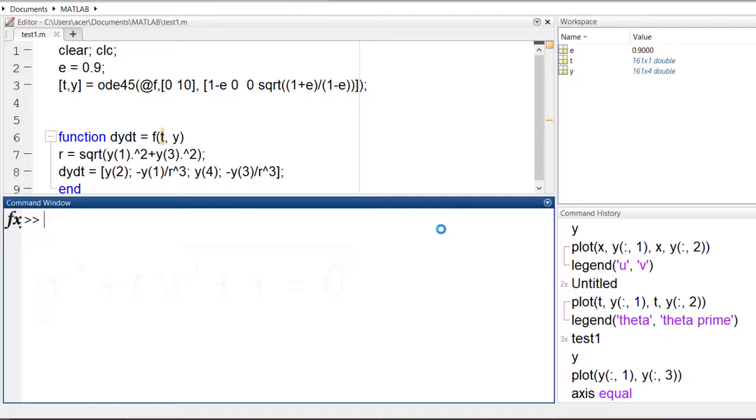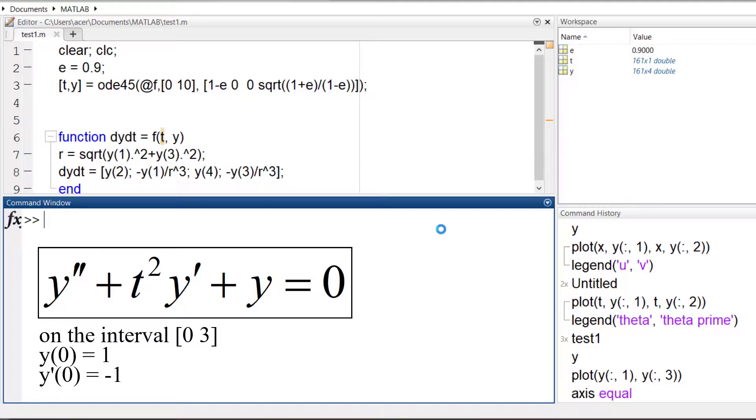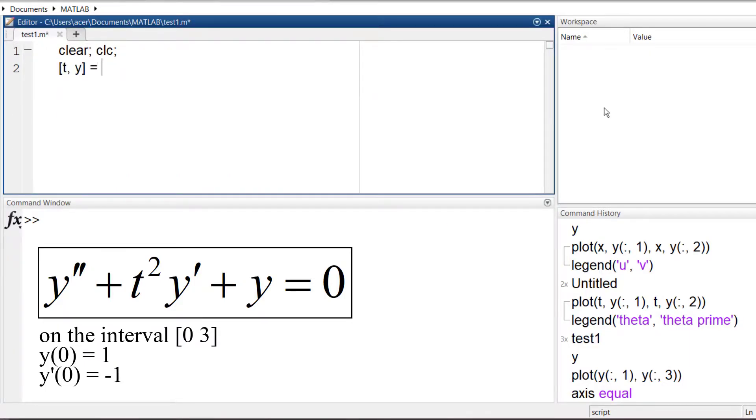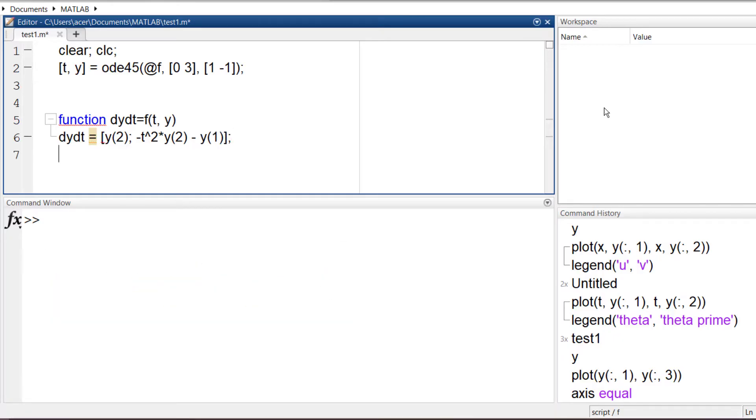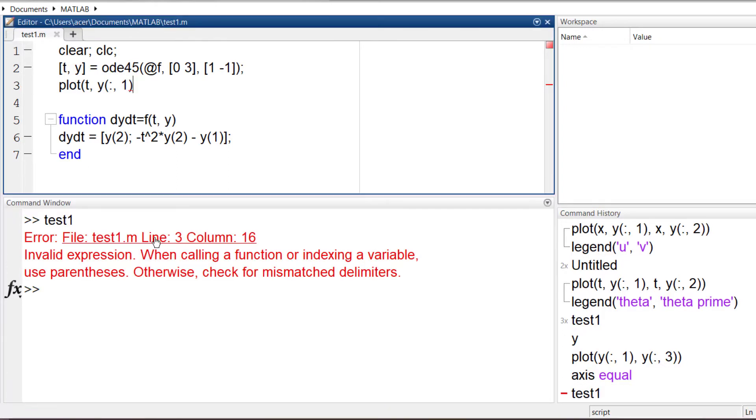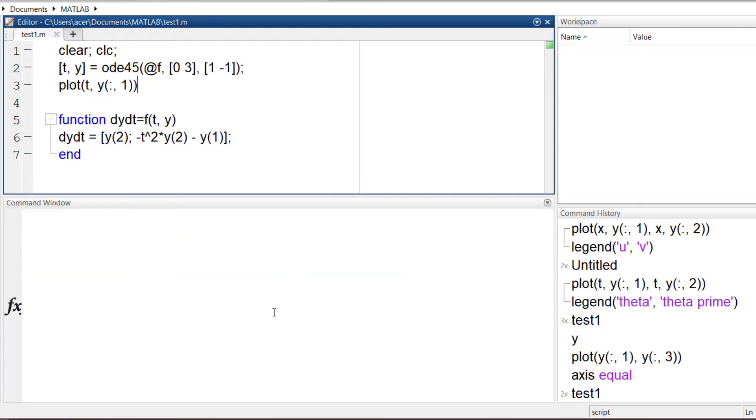Let's practice with one more example. Try to solve this equation on this interval with these initial conditions. The procedure must be familiar by now. t and y equal to ODE45 at sign f. I specify the interval and initial conditions. Then as expected, function dy dt equal to f of t comma y. And to define this function f, we only need to find out how to write the output dy dt. I add a plot command to see the results.